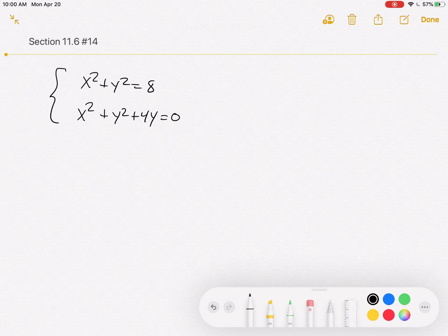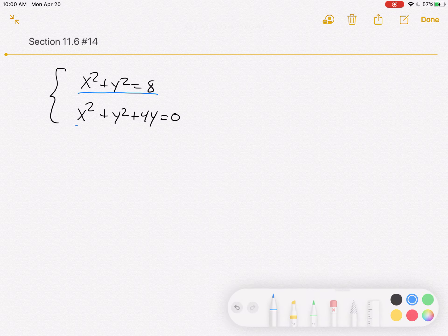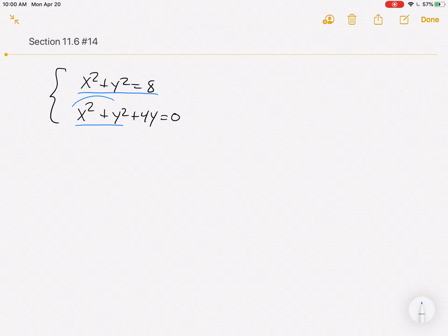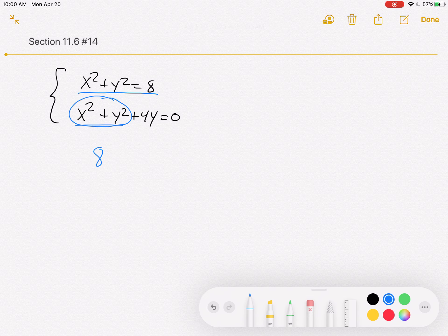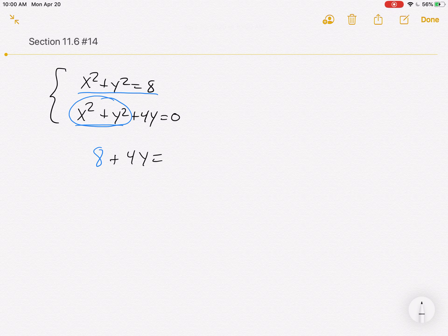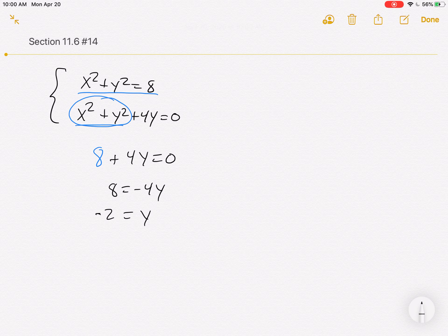Take a look at that very first equation. I'll underline it in blue again. Look, it's right there in the second equation. You can take that whole x squared plus y squared and replace it with the number 8. And you'll be well on your way to solve this thing. So 8 plus 4y is equal to 0. So 8 is equal to negative 4y. Or y is equal to negative 2. So these two things are going to intersect at a y value of negative 2.